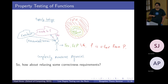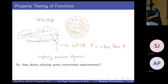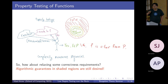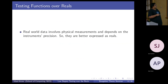How about relaxing some correctness requirements on your algorithm? The setup remains the same — P is still an arbitrary subset of the set of functions — but around the boundary of P you introduce a region of uncertainty. Your algorithm is allowed to fail in this epsilon-width region. You introduce randomization to reduce the number of queries you need to make. Algorithmic guarantees are still desired in the shaded regions; in this strip your algorithm is allowed to fail. This was the setup of property testing. Now let's introduce property testing over the reals.